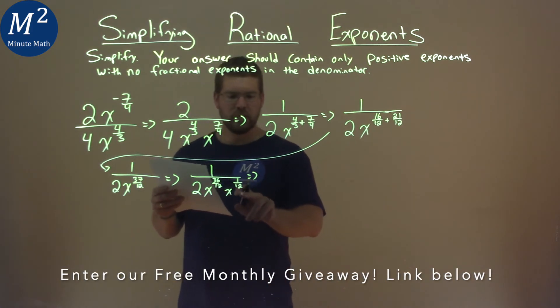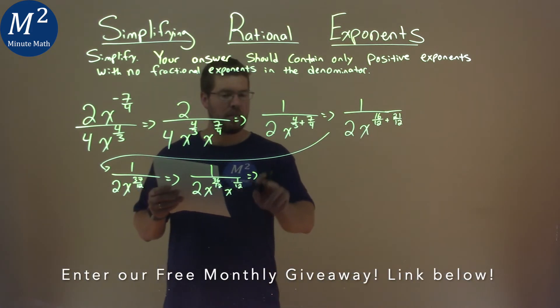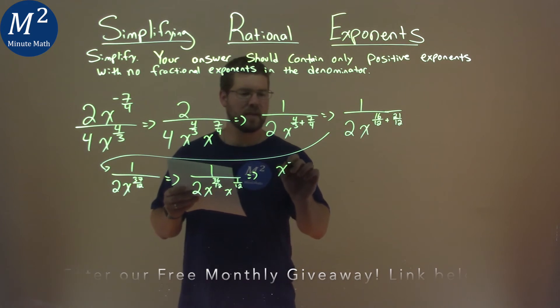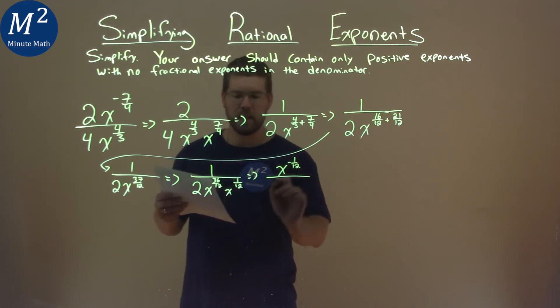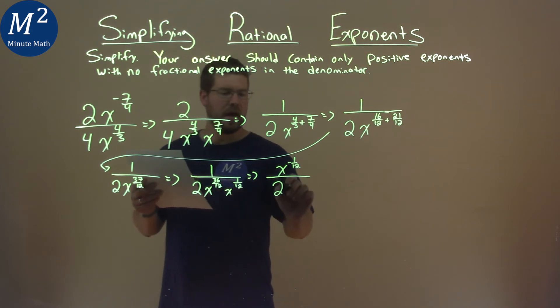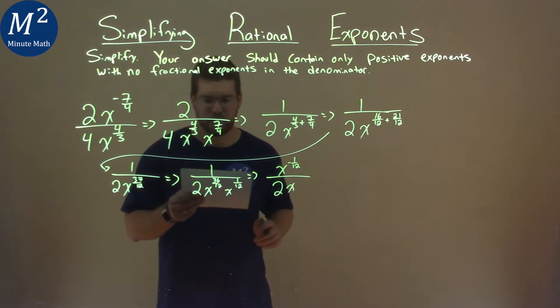Well, rewriting this is bring the x to the 1 twelfth back to the numerator, so we have x to the negative 1 twelfth power up top, and the denominator is actually pretty easy, 2x, and 36 divided by 12 is 3.